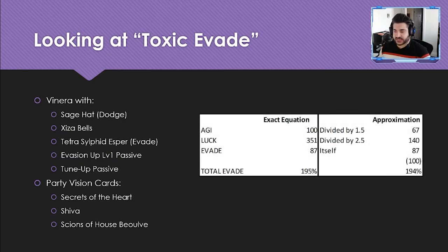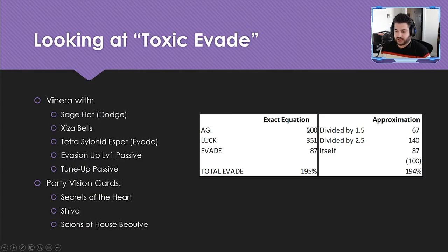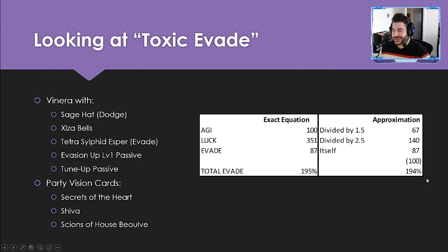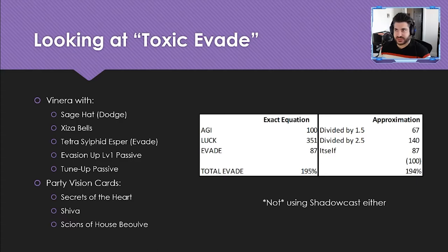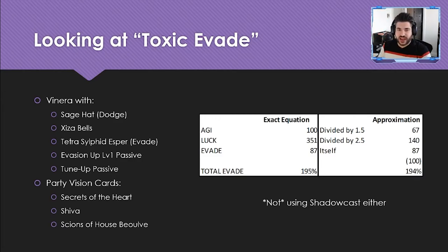With this top-tier whale Venera build, let's calculate her evasion. Her stats are 100 agility, 351 luck, 87 evade. Running the exact formula gives 195%; the simplified rough version gives 194% — essentially identical for our purposes. That's also not including Shadow Cast, which adds 42 evasion percentage points, so you'd add 42 to that 195 for her total in-skill evasion.